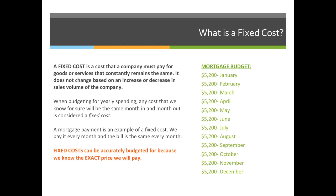When budgeting for yearly spending, any cost that we know for sure will be the same each month in and out is considered a fixed cost. A mortgage payment is an example of a fixed cost — we pay it every month and the bill is the same every single month. Fixed costs can be accurately budgeted for because we know the exact price we'll pay.